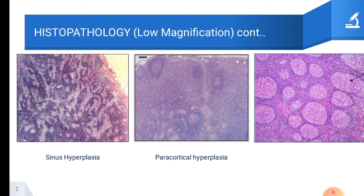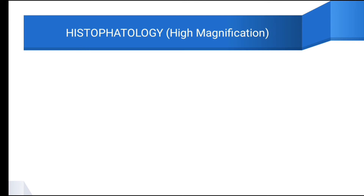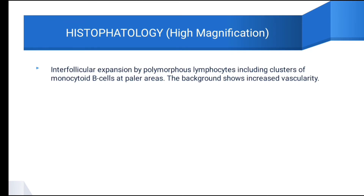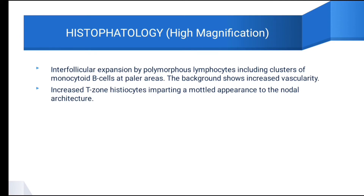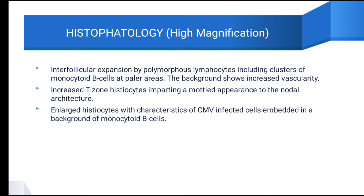This is an example of follicular hyperplasia. As you can see in the slide, the lymphoid follicles are larger and more numerous than they should be, with variations in size. Follicular hyperplasia is due to B-cell expansion. At high magnification of CMV, the morphology shows inter-follicular expansion by polymorphous lymphocytes, including clusters of monocytoid B cells forming pale areas. The background also shows increased vascularity and increased T-zone histiocytes imparting a mottled appearance to the nodal architecture. The enlarged histiocytes with characteristics of CMV-infected cells are embedded in a background of monocytoid B cells.